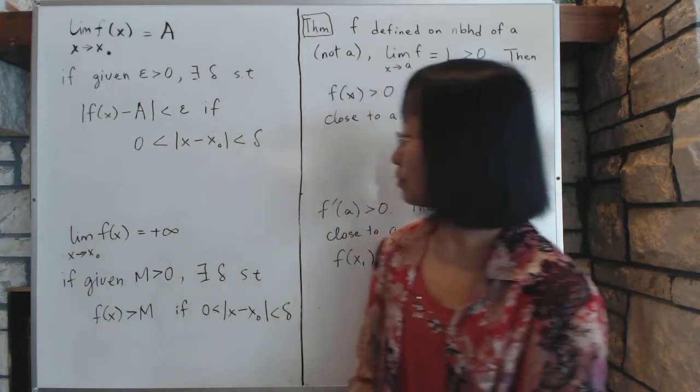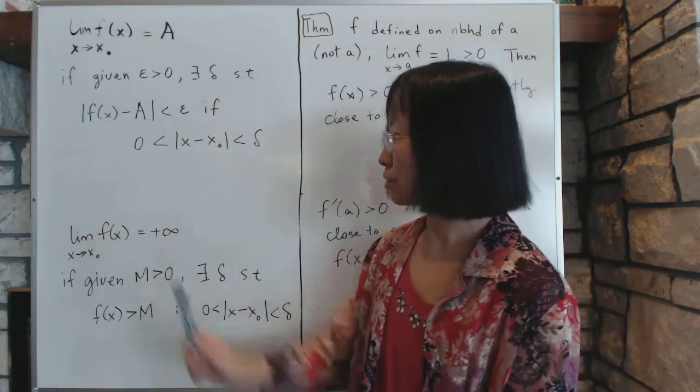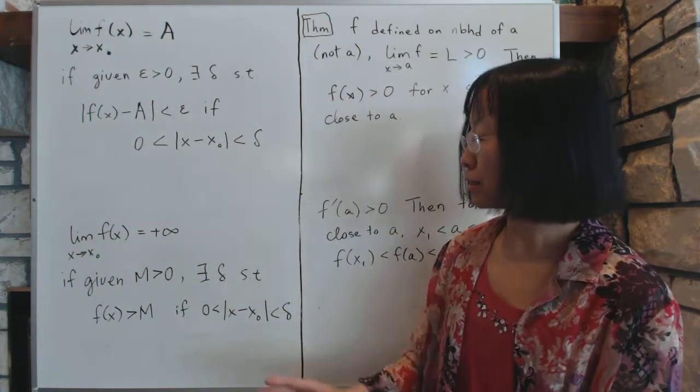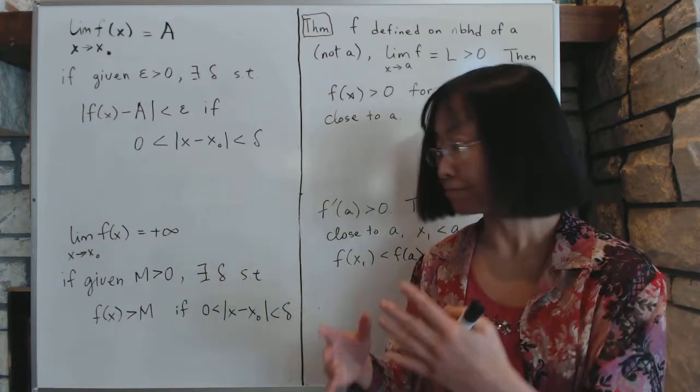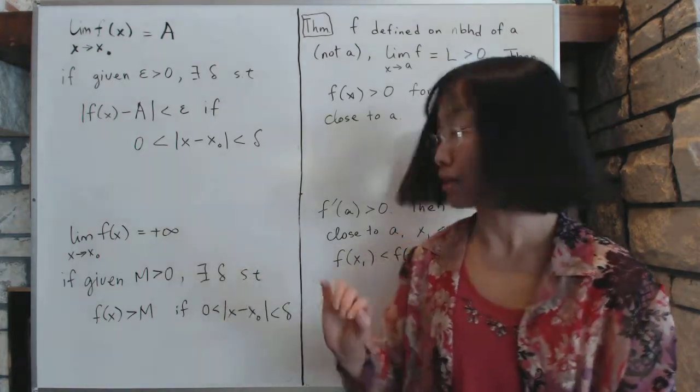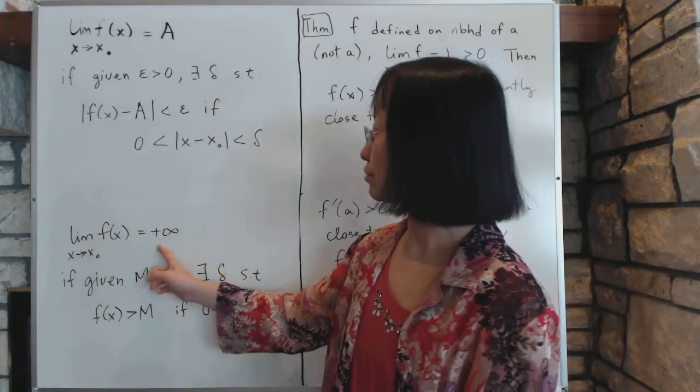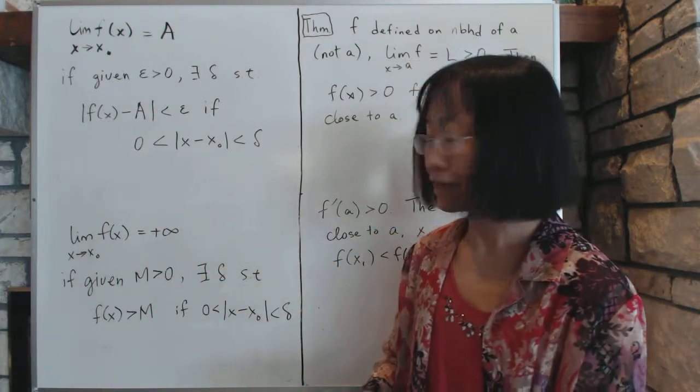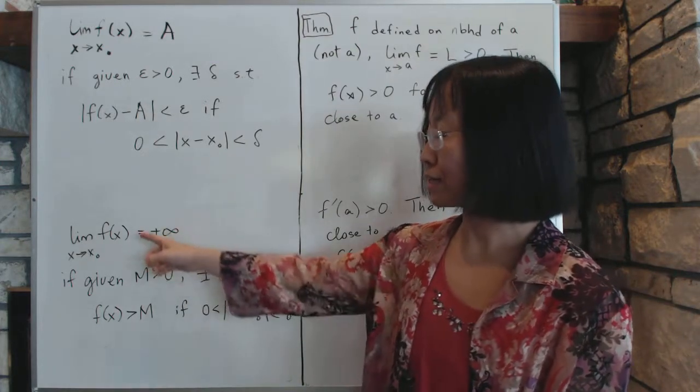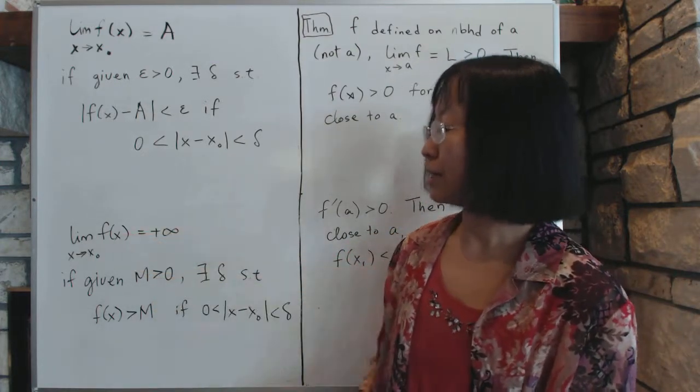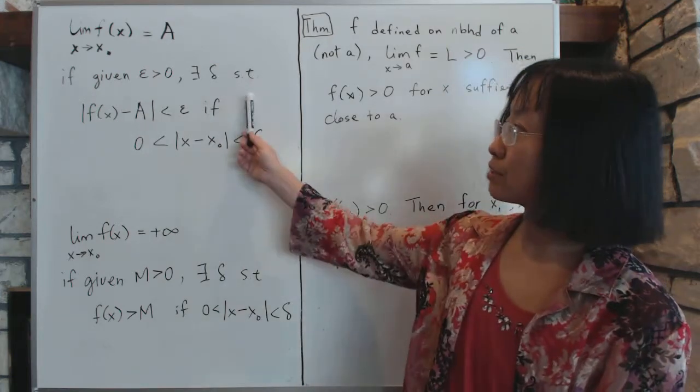There's a different kind of limit where the function approaches some kind of infinity, because the value of that function gets bigger and bigger, or negative infinity. The same principle, but we're only going to talk about the positive one for now. The negative one is exactly the same situation. If the function values become more and more positive, to define it, we'll define it very similar to this, just change some of the wording.